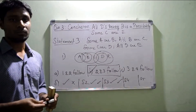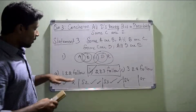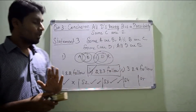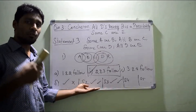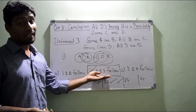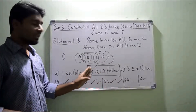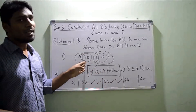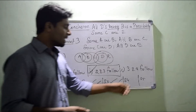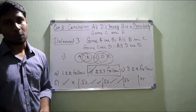If options are like 1 and 2 follow, 2 and 3 follow, 3 and 4 follow — simply check: if statement 2 is following, don't immediately go for option B. Check statement 3 as well. If 2 and 3 are both getting followed, simply go for option B — 2 and 3 follow. There is no need to waste time checking statements 4 and 5, because ultimately those will be a false option.